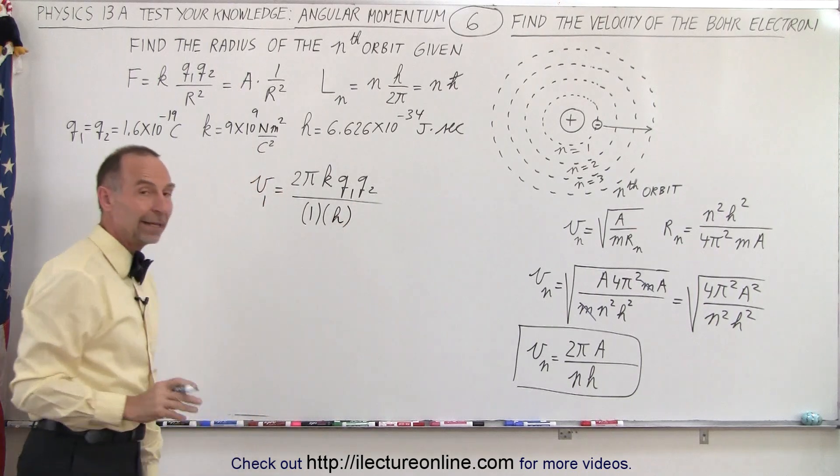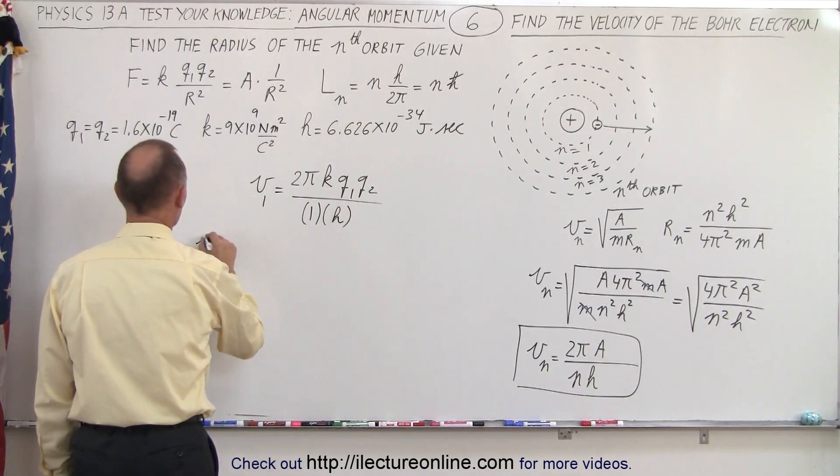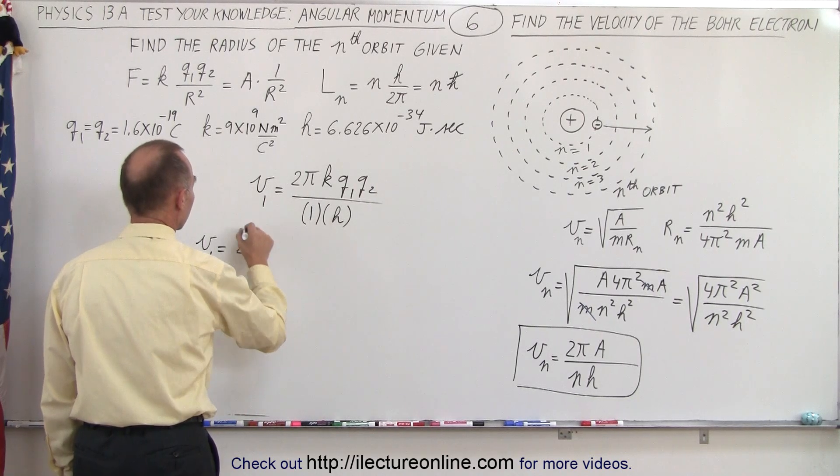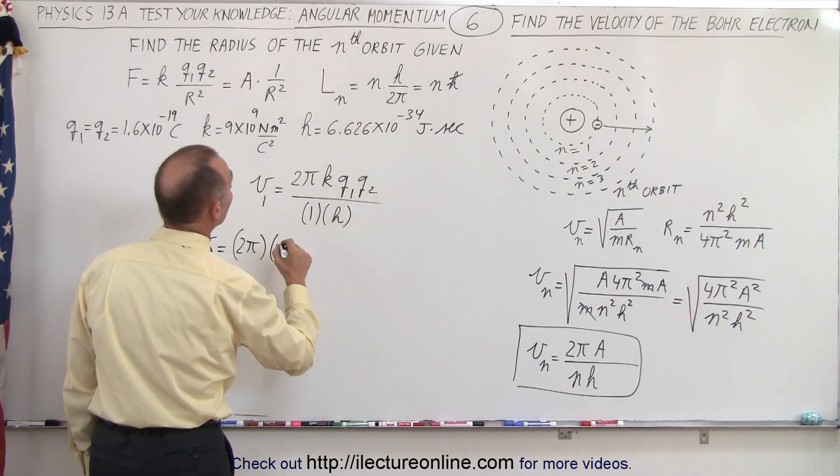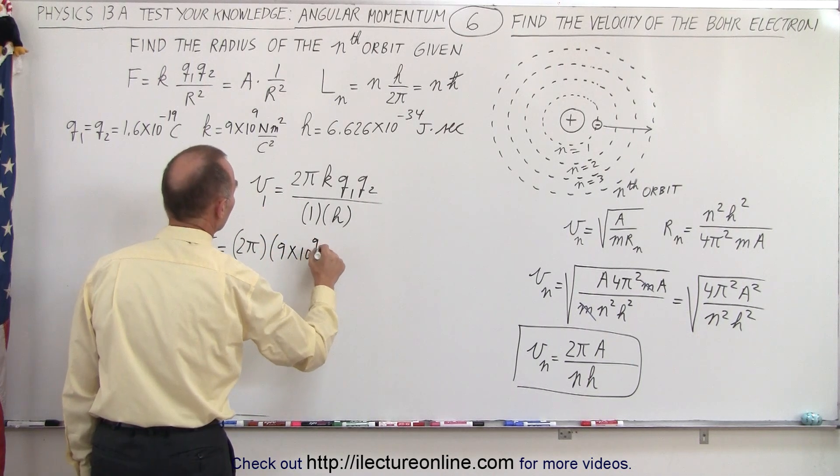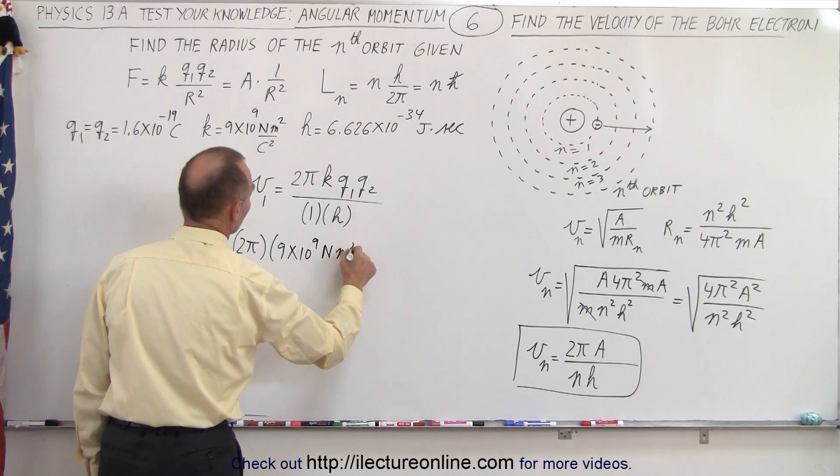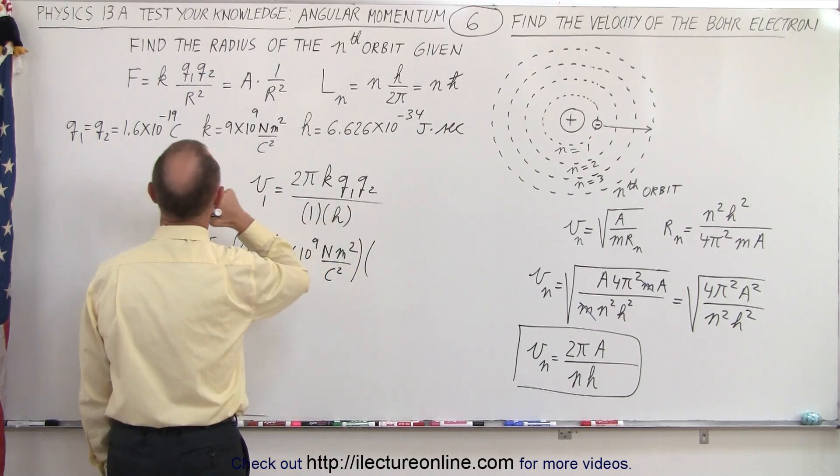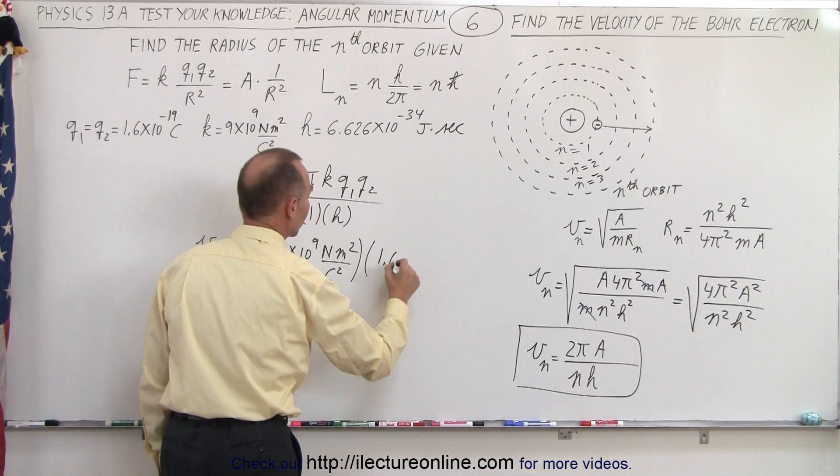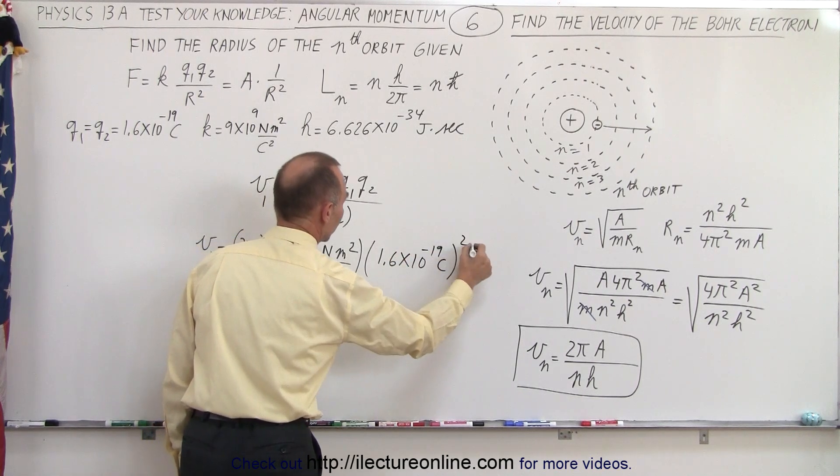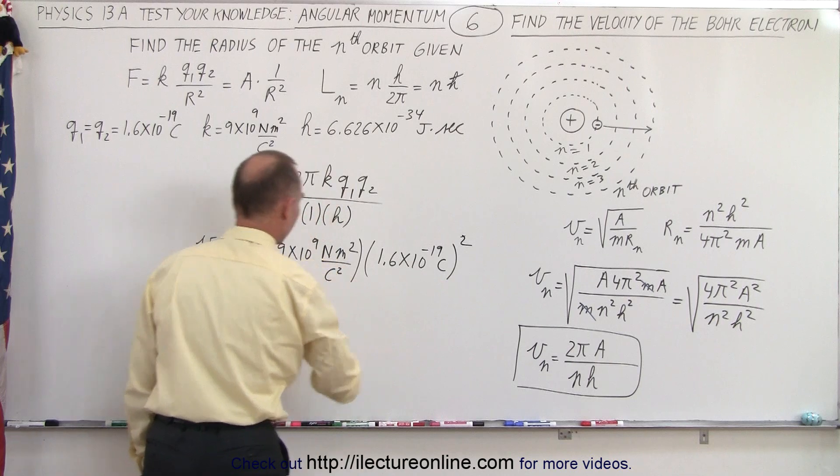And now when we plug in the values, we get the velocity of the electron in the first orbit to be 2 pi times k, which is 9 times 10 to the 9th newton meter squared per coulomb squared times q1 times q2, which is 1.6 times 10 to the minus 19 coulombs. And we have to square that, so coulomb squared cancels out.